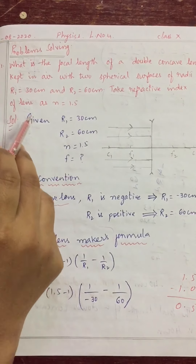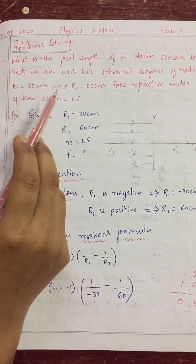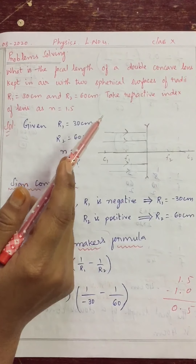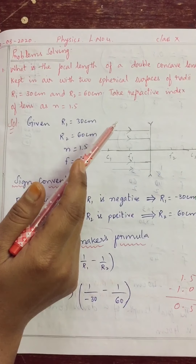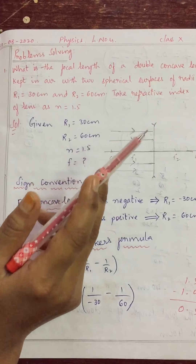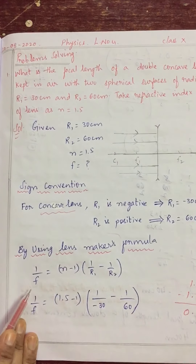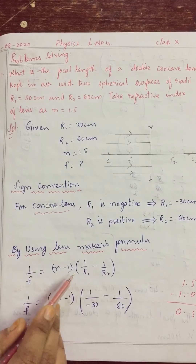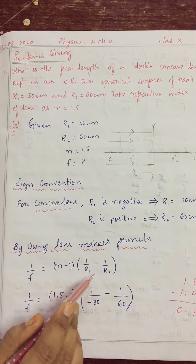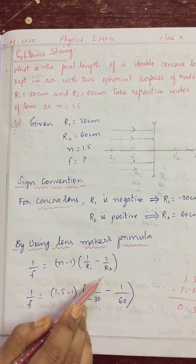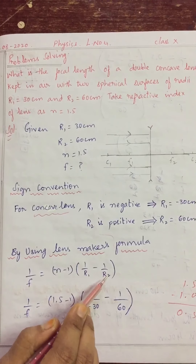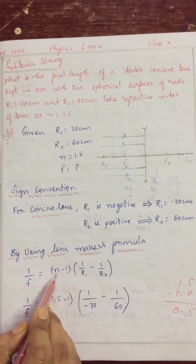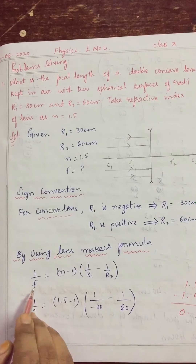Good morning children. In the previous class we solved problems by using the lens formula. Today we will solve some more problems by using the lens maker formula. The lens maker formula is 1/f = (n - 1) × (1/R1 - 1/R2), where R1 and R2 are the radii of curvature, n is the refractive index, and f is the focal length.